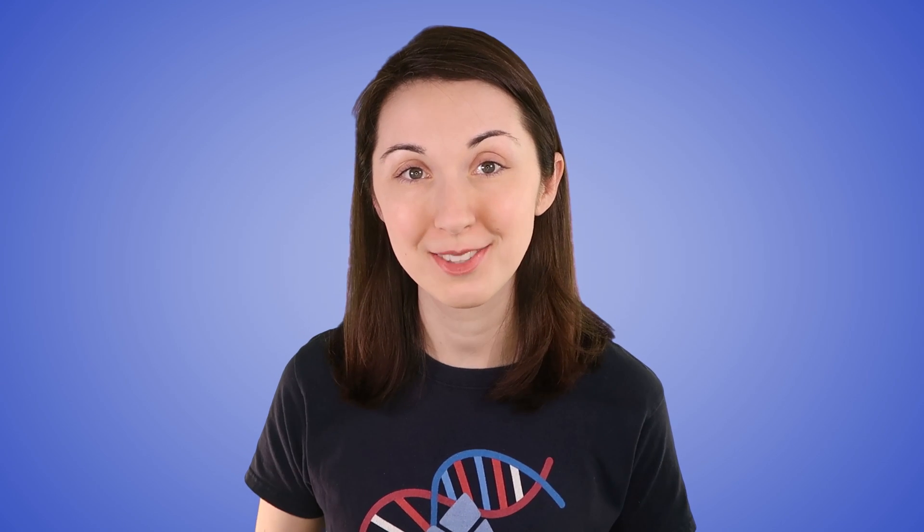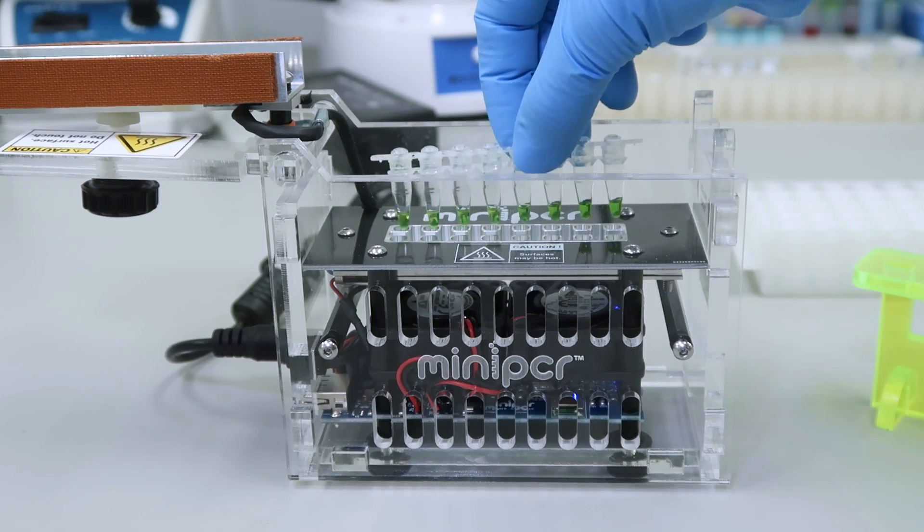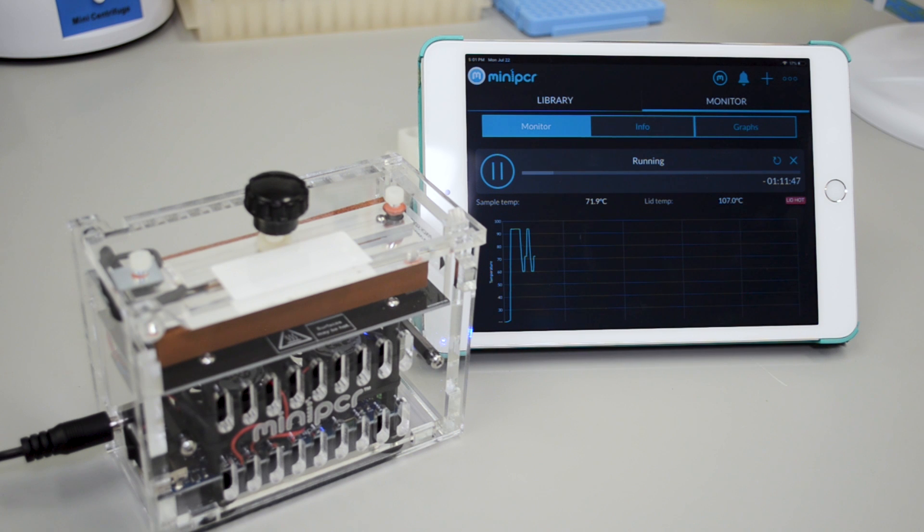All of these steps happen in a machine called a thermal cycler. Here, we are using a mini-PCR machine from MiniPCR Bio. We place our DNA, along with all the ingredients needed for the reaction, into tubes, and then place them inside. The thermal cycler will heat it up, and cool it down, just as we tell it to.